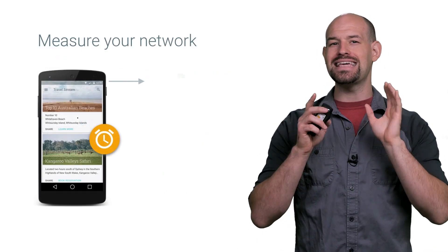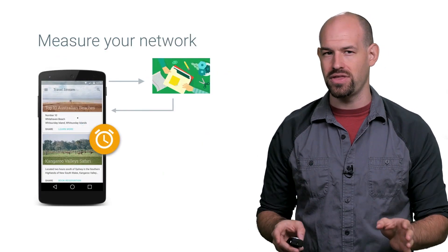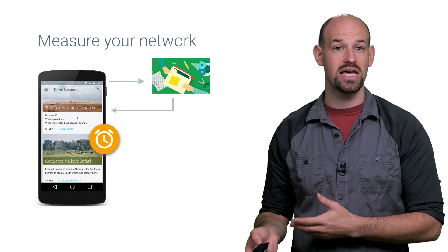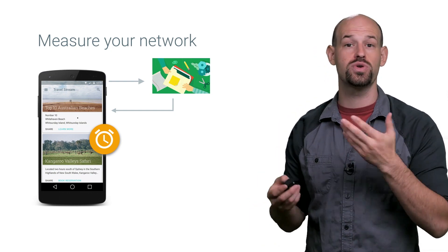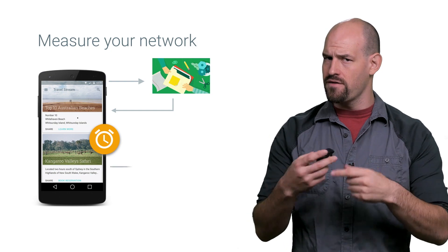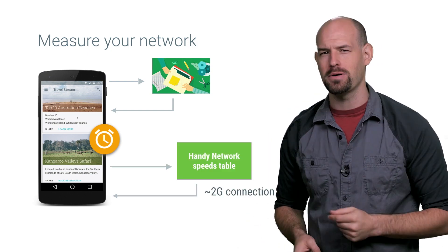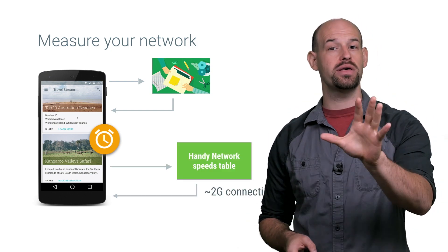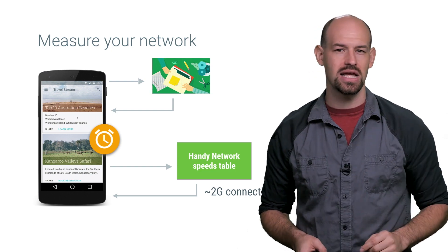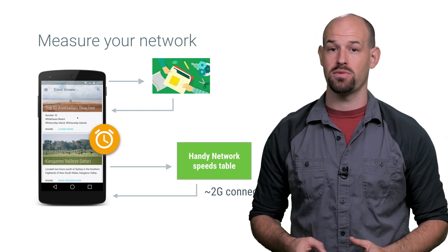And it's worth pointing out that the easiest way to determine the health of the network is simply to time how long it takes for some known piece of content to return from a request. With a few simple calculations and a handy lookup table for common network speeds, you can quickly determine what type of network the user is connected to and adjust your fetching and requests accordingly.